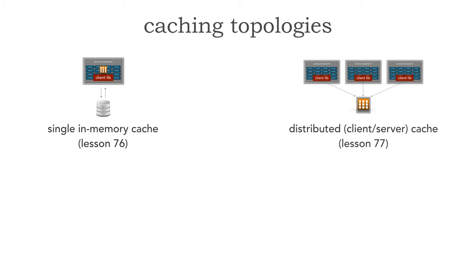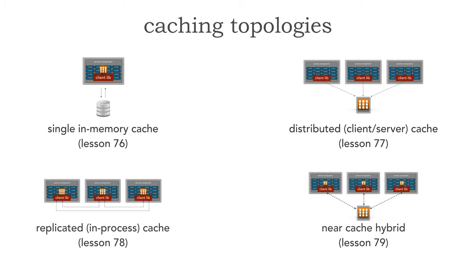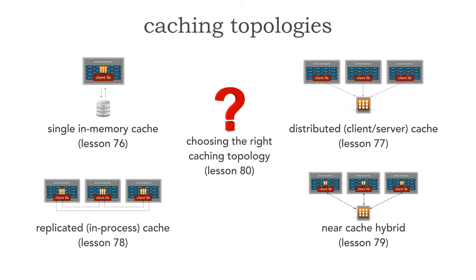In the next lesson, number 77, we'll take a look at distributed caching or client server. In lesson 78, we'll look at a replicated or in-process cache. In lesson 79, we'll take a look at a near-cache hybrid combining some of these together. And in lesson 80, we'll look at choosing the right type of caching topology, examining various factors and conditions about when to choose which one.